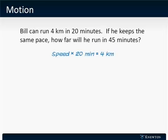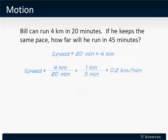We use the formula speed times time, which is 20 minutes, equals distance, 4 kilometers. In other words, speed equals 4 kilometers over 20 minutes, which we can reduce to 1 kilometer every 5 minutes, or 0.2 kilometers per minute.